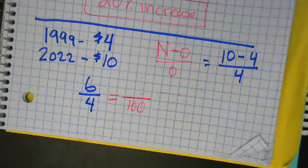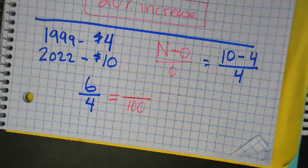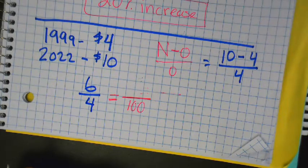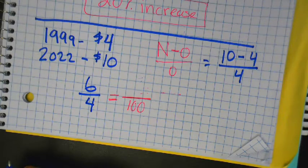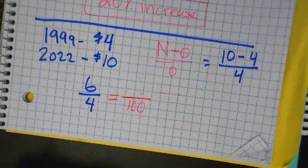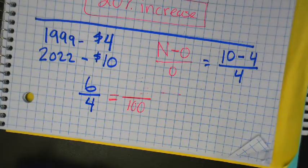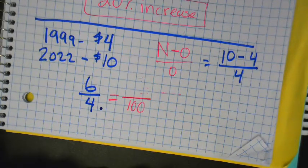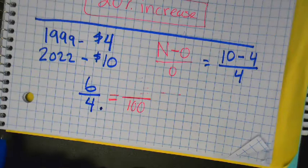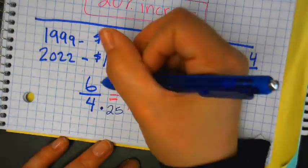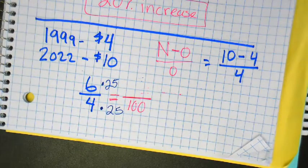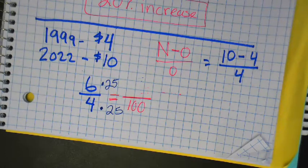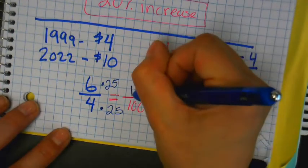4 times what is 100? 25. So 6 times 25. 150. Put your mask on. I need your mask on now. 150. So what percent is this? 150%. Increase or decrease? Increase. Yep. My entire savings have become gone.